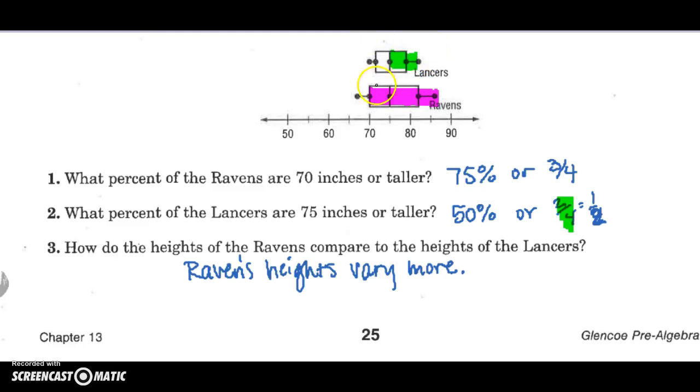Let me erase. Look how the end of the Lancers is right at the lower quartile for the Ravens. And the upper quartile is right at the maximum of the Lancers. So the Ravens, 50% of theirs equals the whole Lancers range.